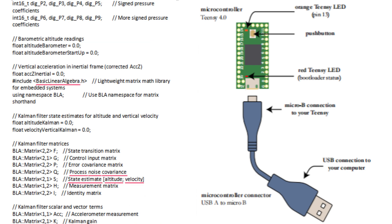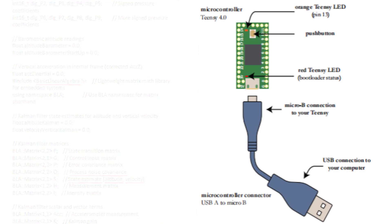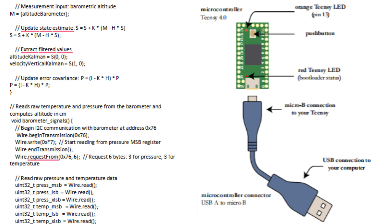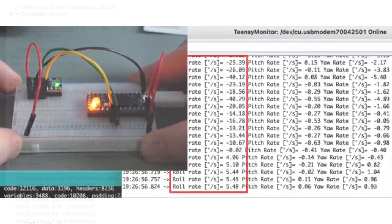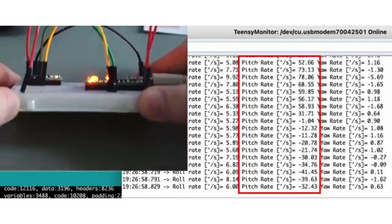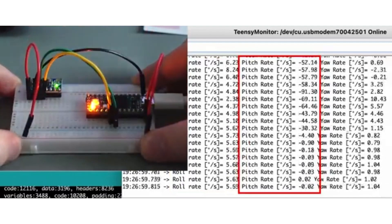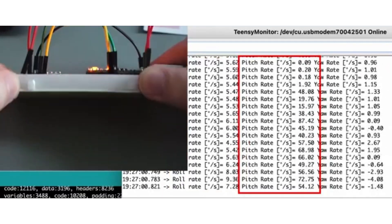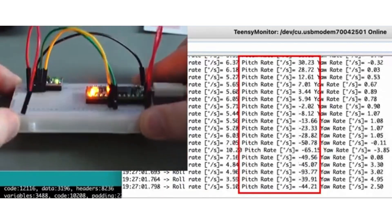You will tune the PID parameters for each axis using the serial monitor displayed on your laptop per instructions. You can adjust the PID values for pitch, roll, and yaw in real-time using the serial monitor.